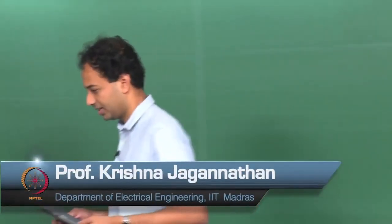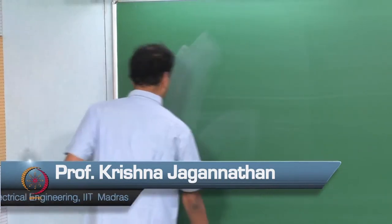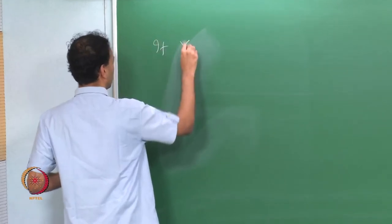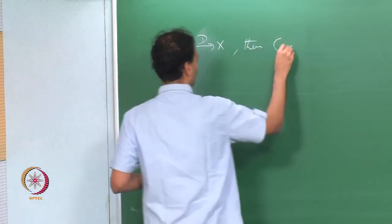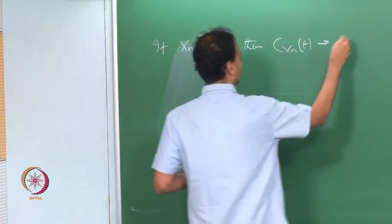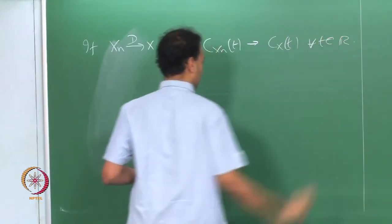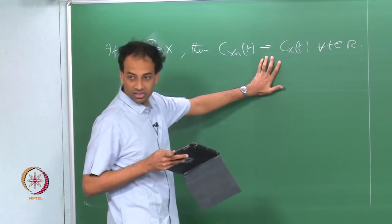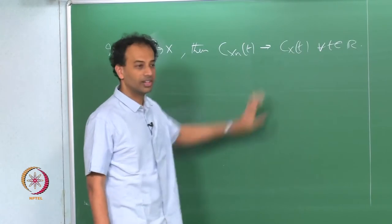We were discussing convergence of characteristic functions. One result we proved yesterday: if x_n converges to x in distribution, then the characteristic function c_{x_n}(t) converges to c_x(t) for all t. This theorem states that convergence in distribution necessarily implies convergence of characteristic functions. We proved this using Skorokhod and the dominated convergence theorem.